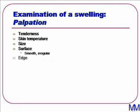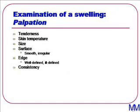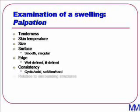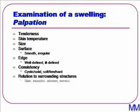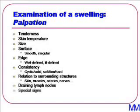We can then move on to assessing the edge — is it well-defined or ill-defined? An ill-defined edge often suggests malignancy. We then think about the consistency of the swelling: is it cystic or solid? And if it's solid, is it soft, firm, or hard? Never forget the relationship of the swelling to the surrounding structures, which include skin, muscles, vessels, and many other structures. Then think about the draining lymph nodes and any special signs.